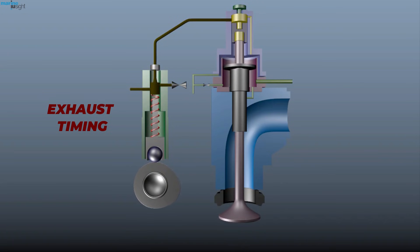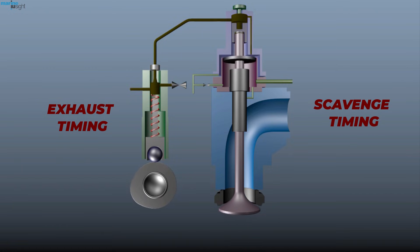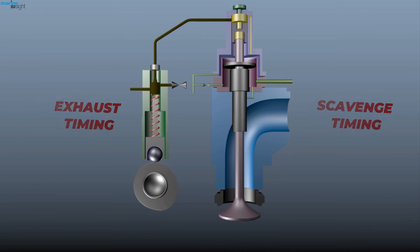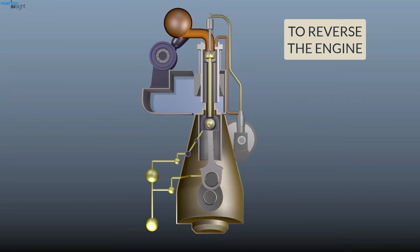In large marine diesel engines, the exhaust and scavenging timing are almost symmetrical in reverse and ahead directions. Hence, to carry out reverse direction, the two important components which need to be changed are fuel pump timing and air injection timing.